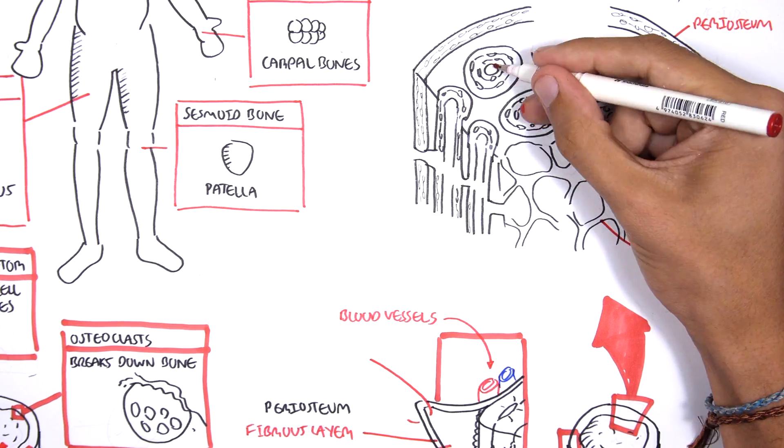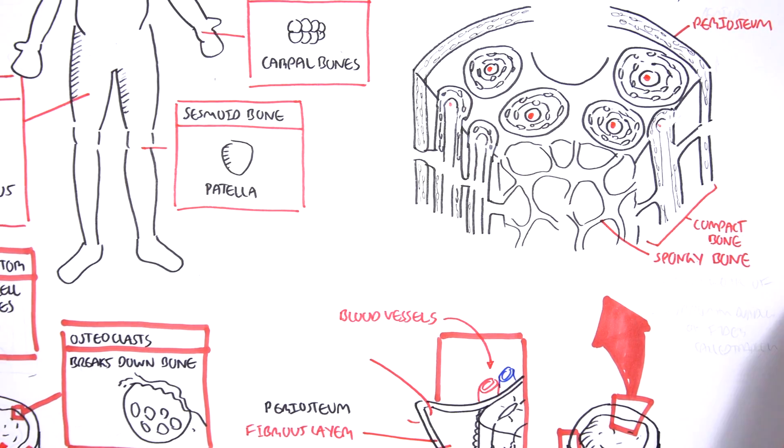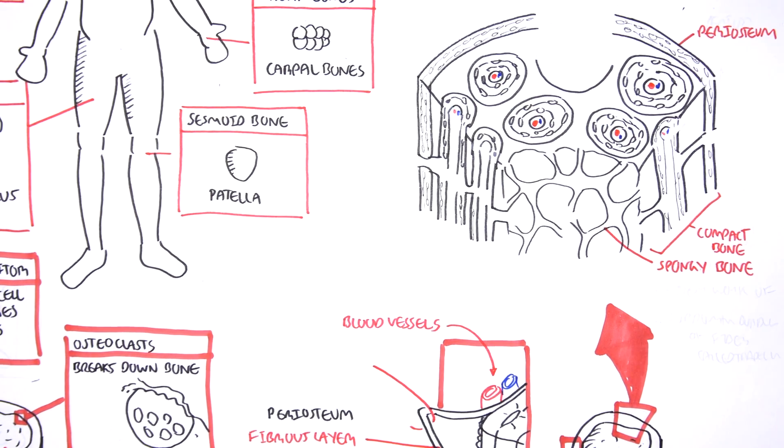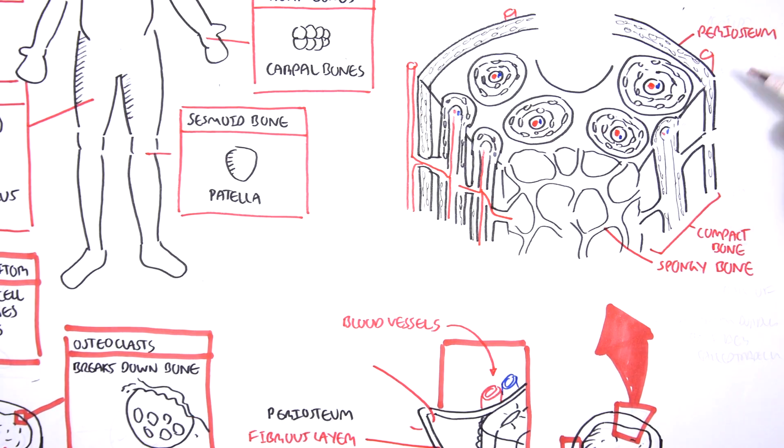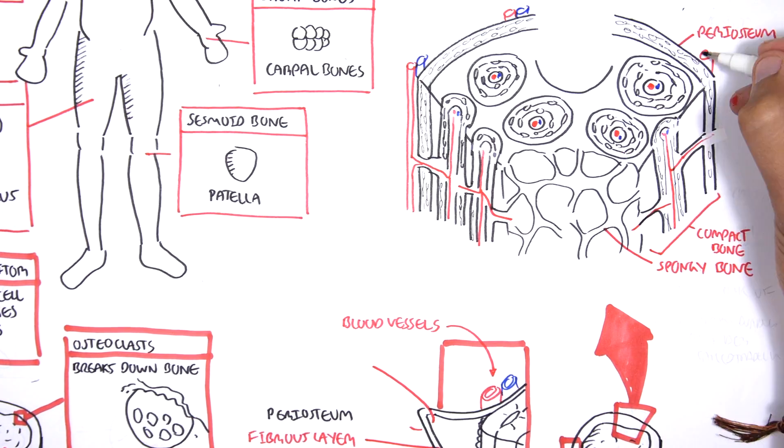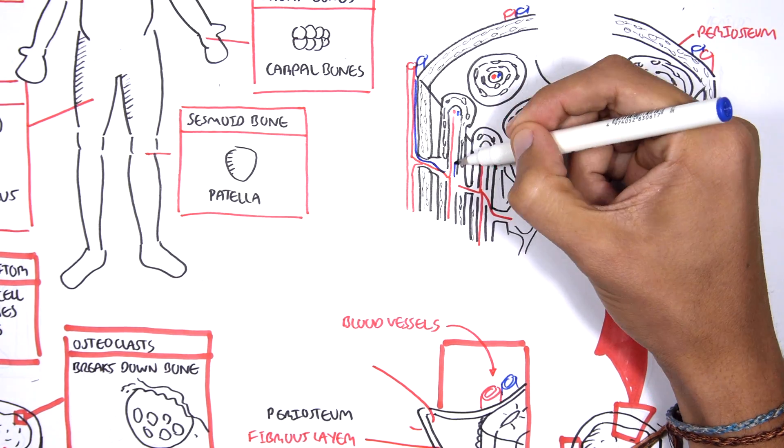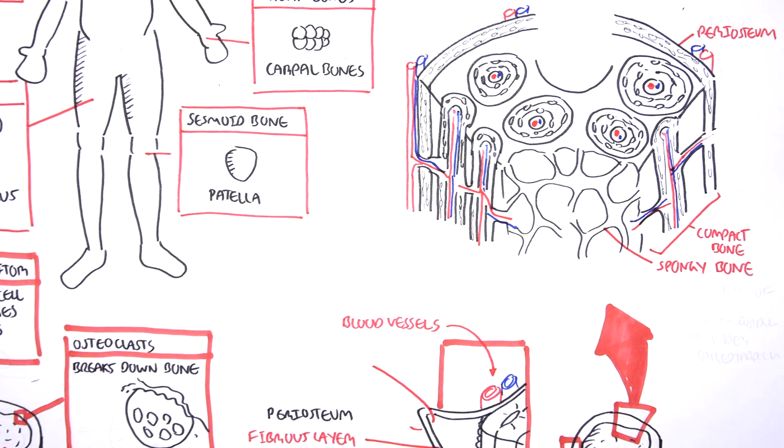Surrounding the compact bone is the periosteum, which is pain sensitive. Remember, surrounding the periosteum are the blood vessels, the arteries and veins. And the arteries and veins can penetrate inside the bone to supply the inner bone as well.